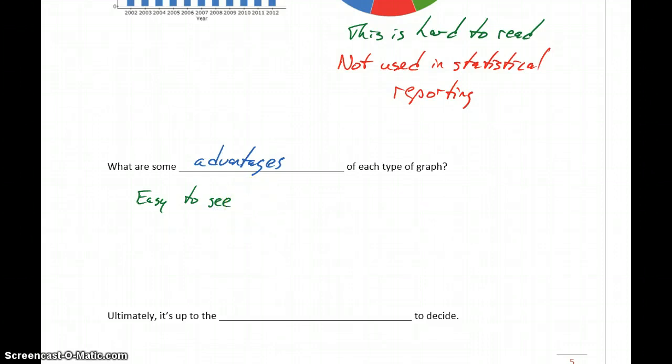and since we have that ability to order them from largest to smallest or smallest to largest, it's easy to see the variation or the differences in the heights of the different bars. So these are easy to see and understand.